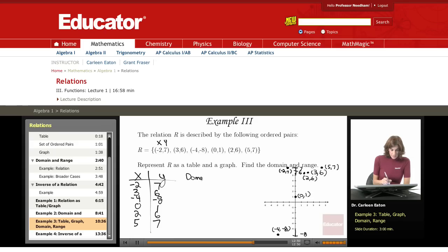The domain is going to be my set of X values, and I have minus 2. It's easier to look at it in the table form. 3, negative 4, 0, 2, and 5.